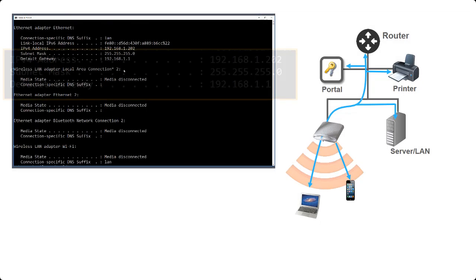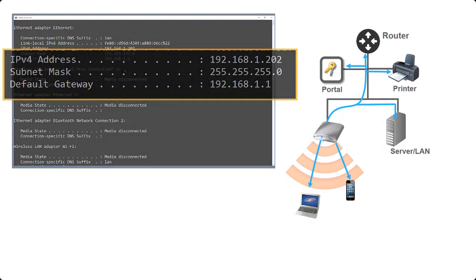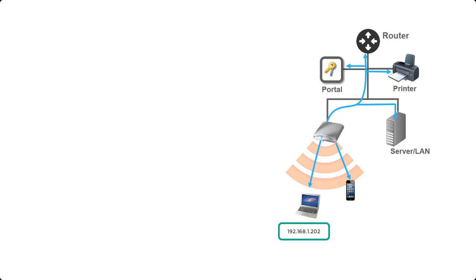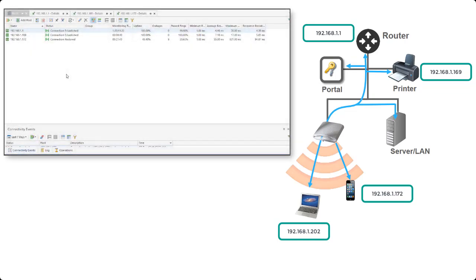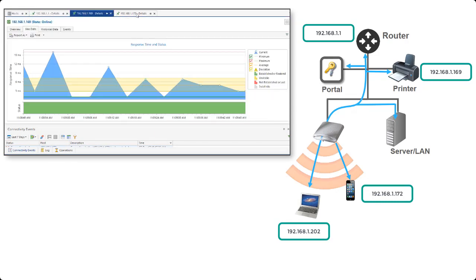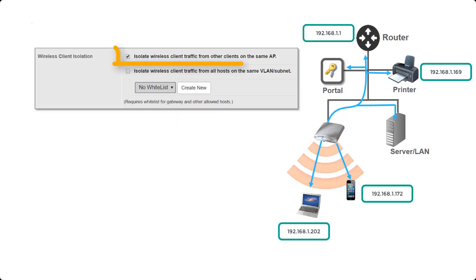Let me demonstrate that. My IP address is 192.168.1.202. I also have online my default gateway on 192.168.1.1, my printer on 192.168.1.169, and my iPhone on 192.168.1.172. I can ping them all from my laptop and I'm getting responses — traffic is flowing nice and smooth with no problems whatsoever. So the network is pretty much open: as soon as I connect to the access point I can access any device on the same subnet and any device connected to the same access point.